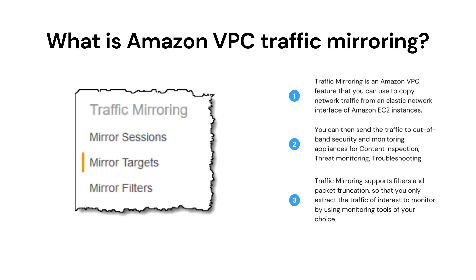The following are the key concepts for traffic mirroring. First is Target — the destination for mirror traffic. Second is Filter — a set of rules that defines the traffic that is copied in a traffic mirror session. Third is Session — an entity that describes traffic mirroring from a source to a target using filters.